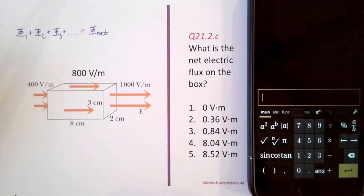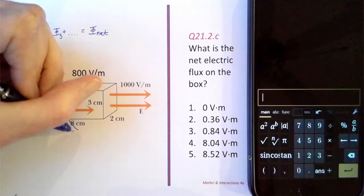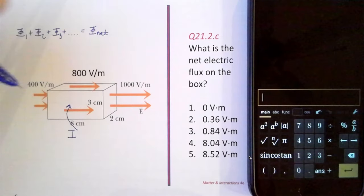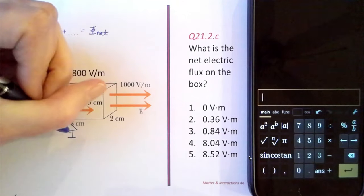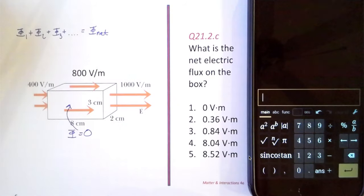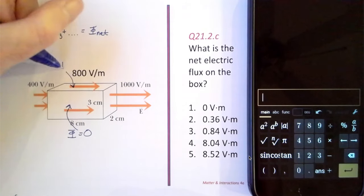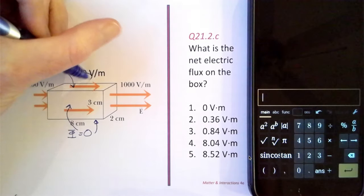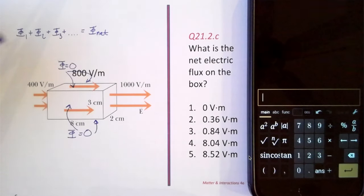So let's start with the easy sides of the box first. This face right here, where the electric field is parallel to the box, the electric field doesn't poke through the box, but it's parallel. So there's no electric flux on that face. There's also no electric flux on the top face or the bottom face and the other backside face. So those four sides on the box have zero flux.